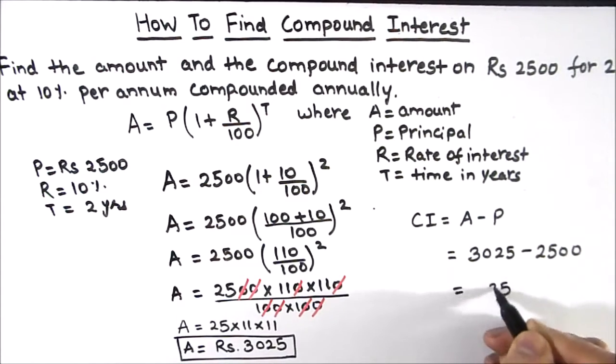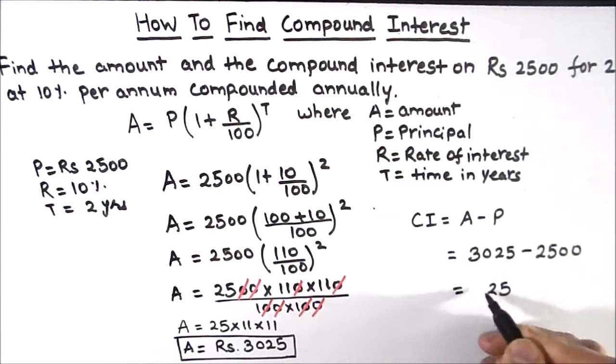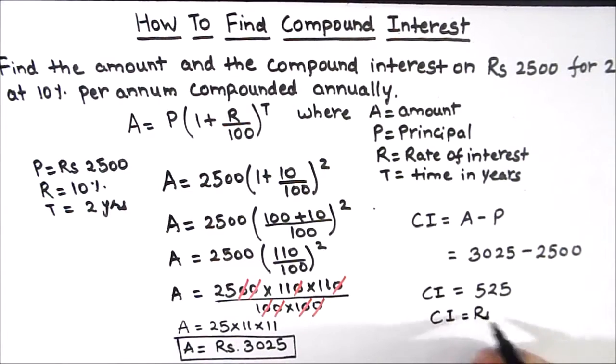So we'll subtract the two. Five minus zero is five, two minus zero is two, zero minus five is not possible so we'll borrow. Ten minus five is five. Compound interest is rupees 525.